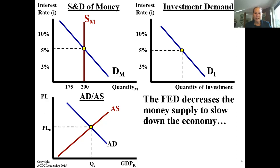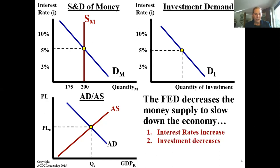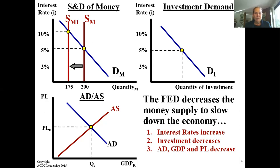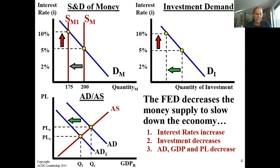The Fed decreases the money supply to slow down the economy — the opposite happens on all three diagrams. Interest rates increase, investment decreases, and aggregate demand, GDP, and price level decrease. The money supply decreases to SM1, so the new interest rate is at 10%. Extrapolate that over — less quantity of investment is demanded. Aggregate demand shifts to the left, and price level and GDP decrease.